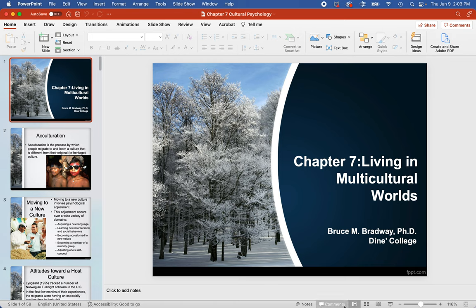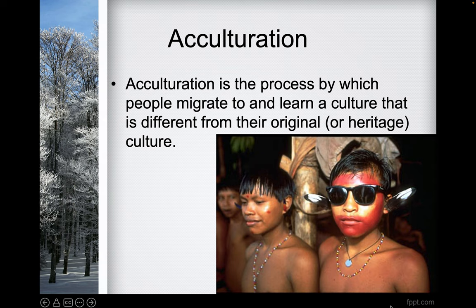Chapter 7 is about living in multicultural worlds. Acculturation is the process by which people migrate to and learn a culture that is different from their original or heritage culture. That's one of the reasons they opened the boarding schools — they were trying to teach the indigenous people in the Americas to become American citizens rather than tribal citizens.